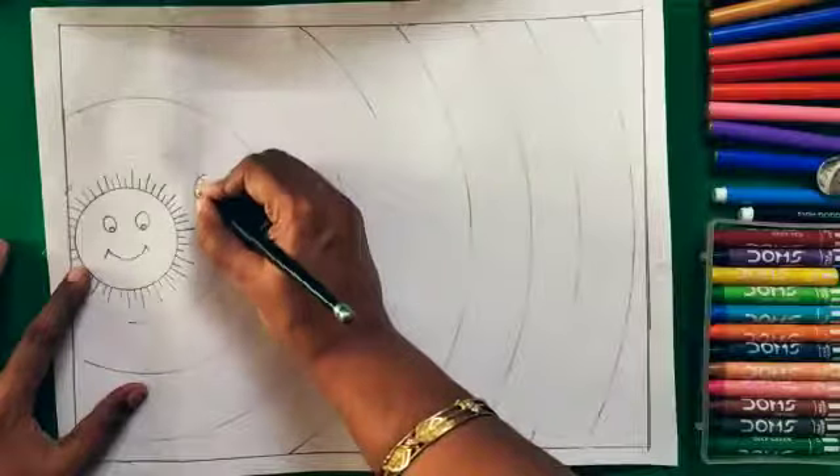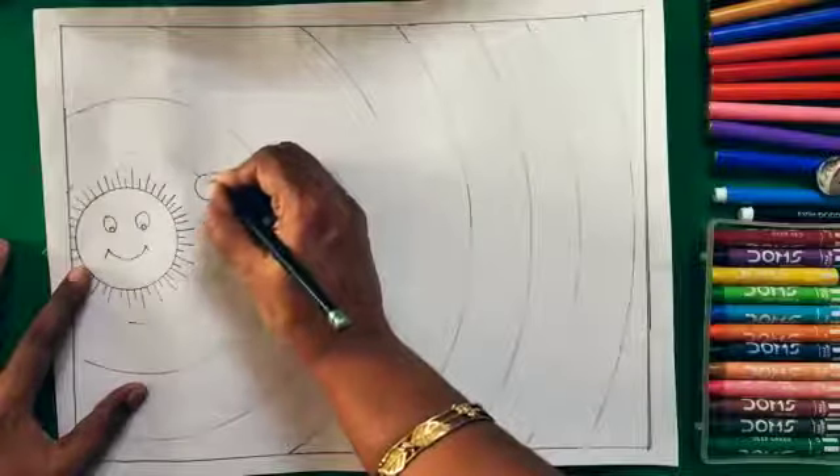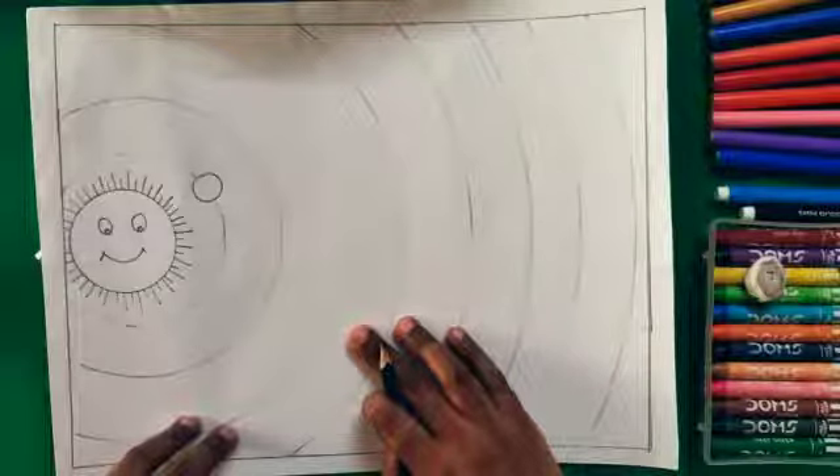Now children, can you tell me the smallest planet? Yes, it's Mercury. So here we are going to make a circle. This is the first planet. Which is the brightest planet? Yes, it's Venus. So children, it should be slightly bigger than the circle of Mercury. So let's draw Venus and it's a second planet.